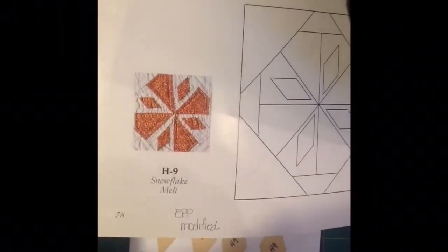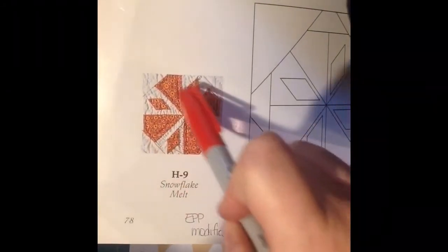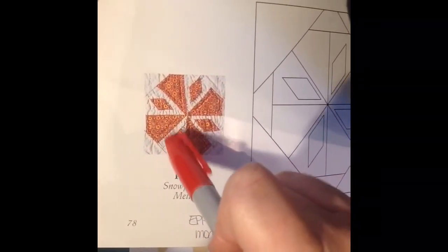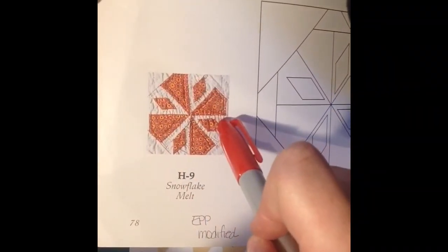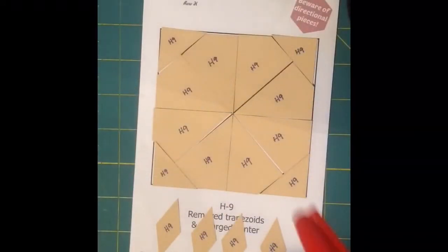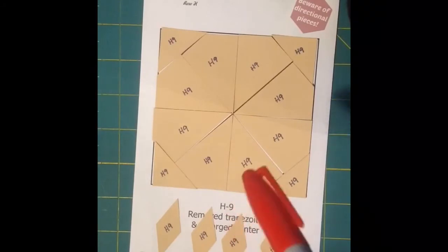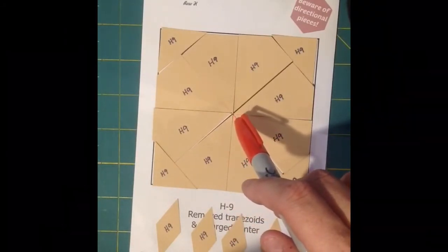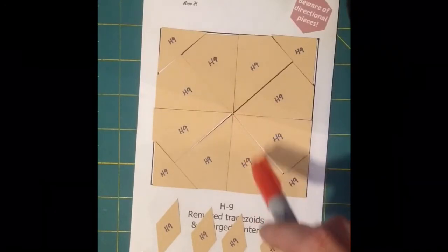Okay, so I've got all the pieces of my H9 block labeled, and I'm going to refer back to the Dear Jane book and see that I need every other pie piece and every diamond to be my focus fabric. So I will put dots on those, and since I have a directional fabric, I will also put arrows. And in this case, I prefer to have my fabric radiating out.